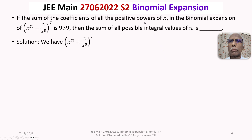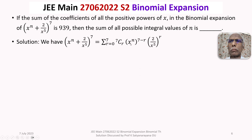We now discuss the solution of the problem in detail. We have (x^n + 2/x^5)^7 in the binomial expansion. It is sigma r=0 to 7 of 7Cr multiplied by (x^n)^(7-r) multiplied by (2/x^5)^r.